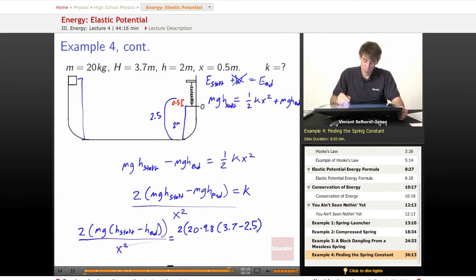Divided by what's x, x is the 0.5, and it's squared. Punch that into a calculator, and our final answer is 1882 newton meters.